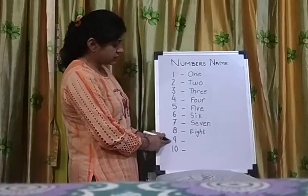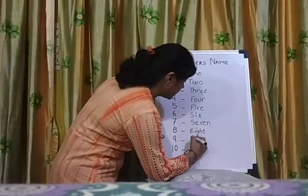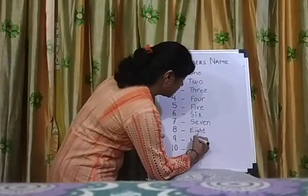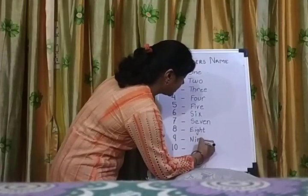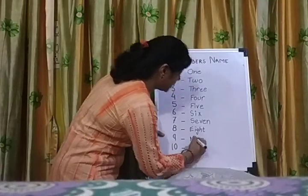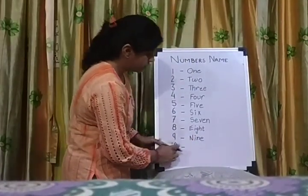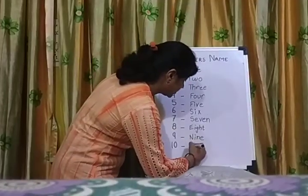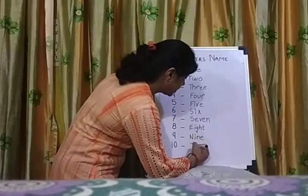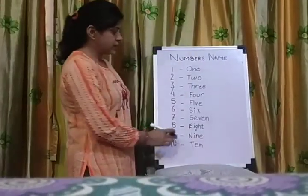This is nine. The spelling of nine is N-I-N-E. Nine. This is ten. T-E-N. Ten.